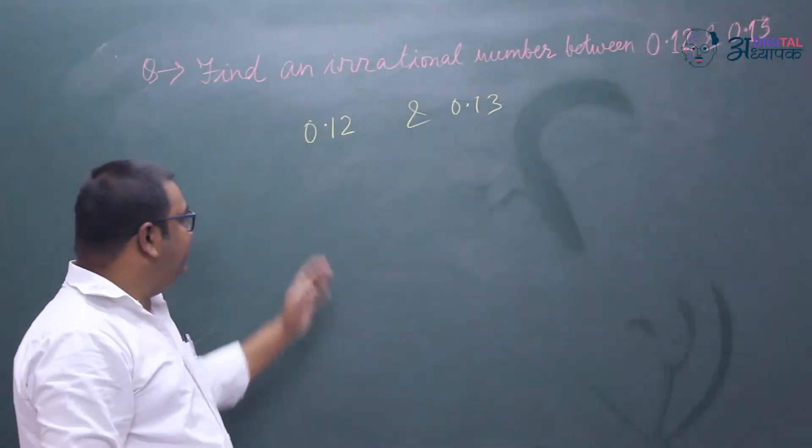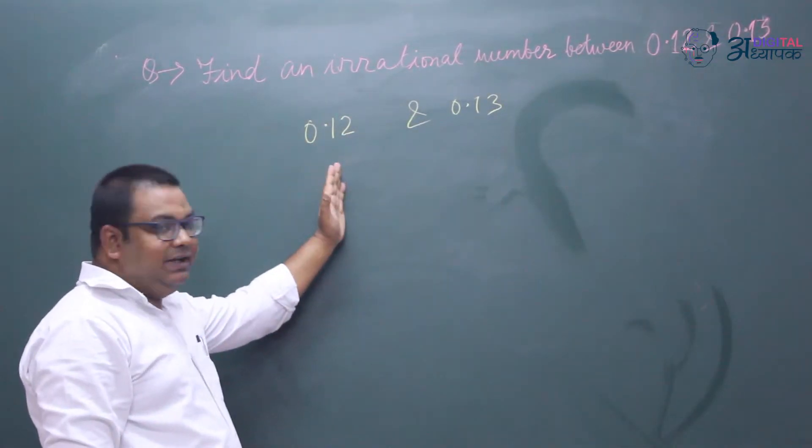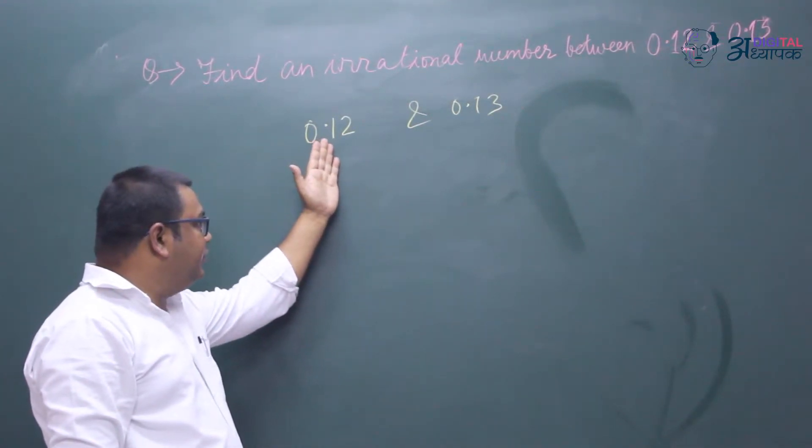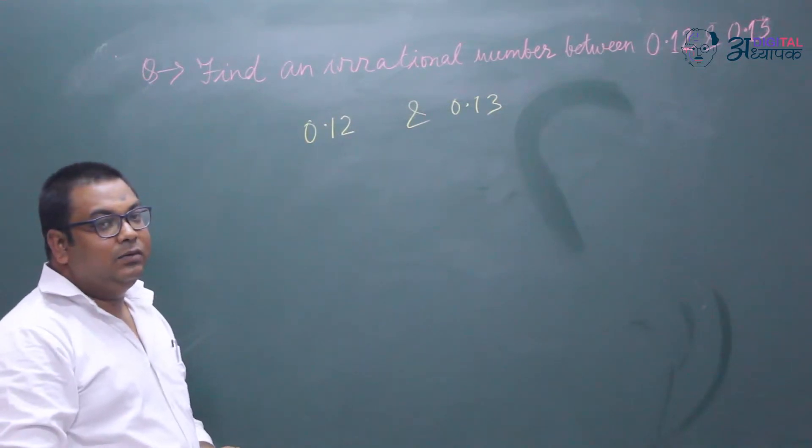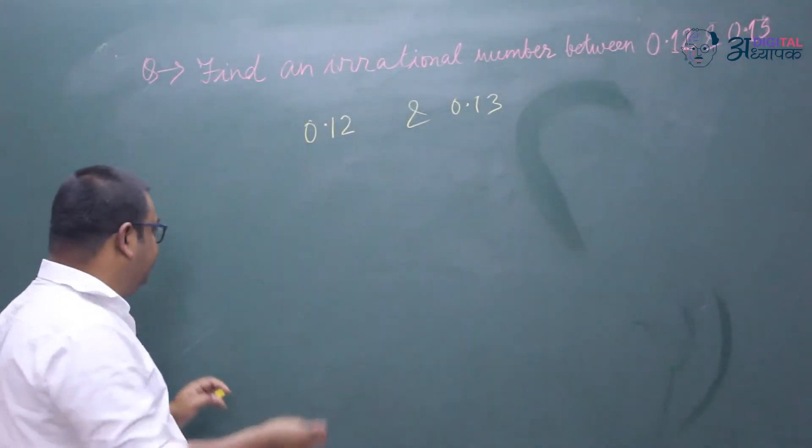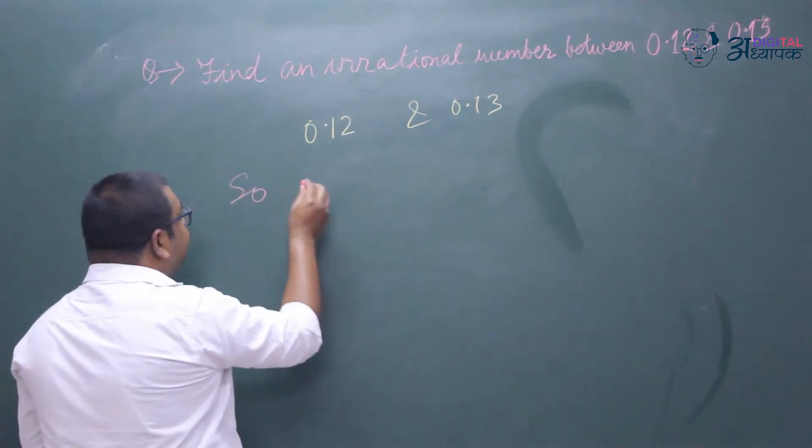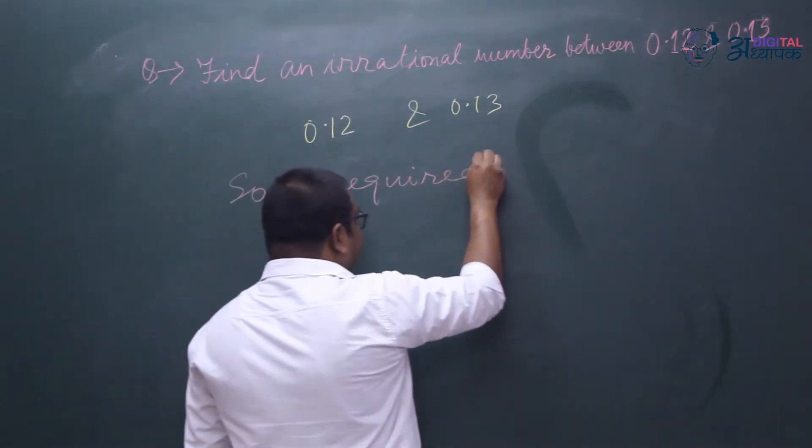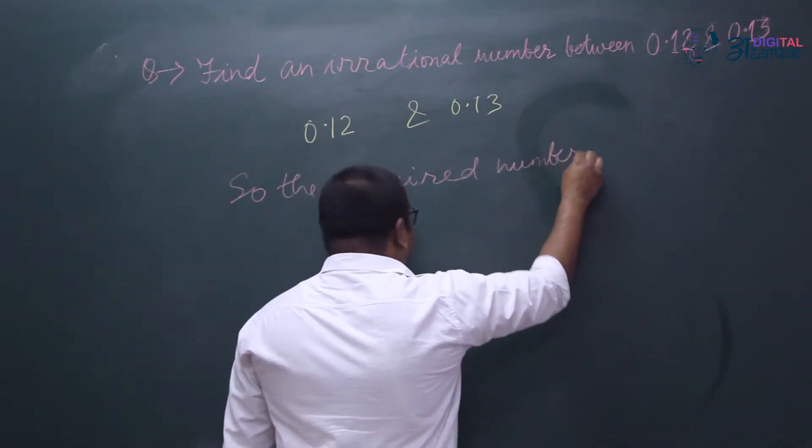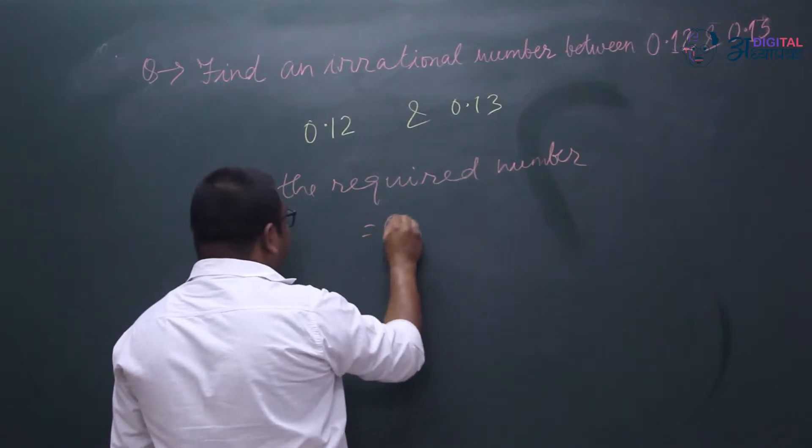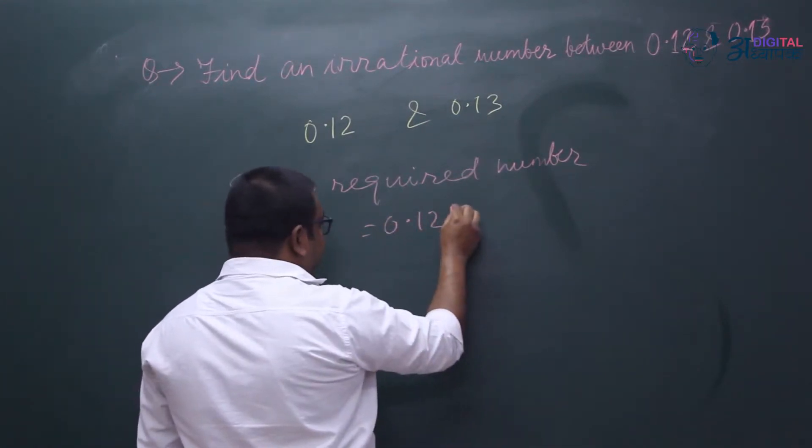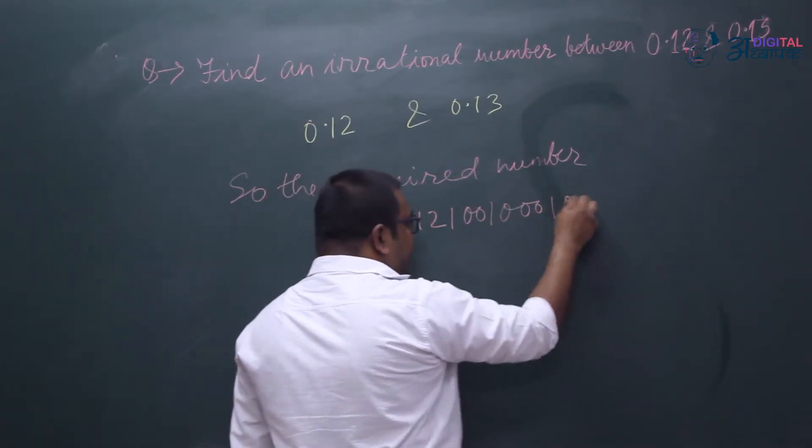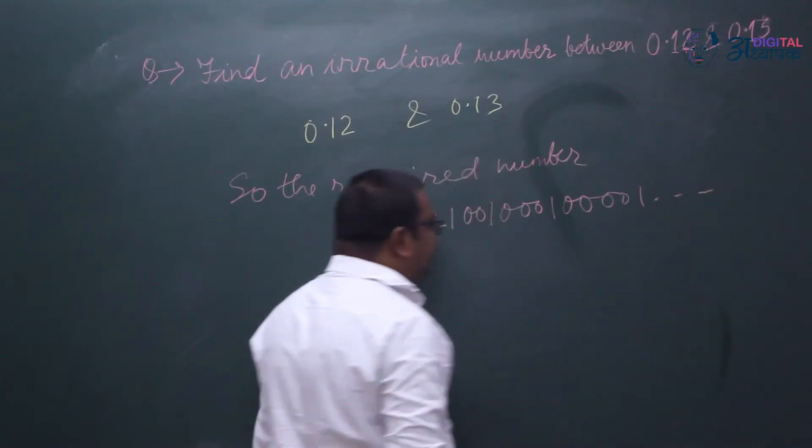So basically what we have to do is add certain irrational numbers which are after 0.12 and in the form of non-terminating, non-repeating decimal. So the required number can be equal to 0.121001001001... and so on, continuing indefinitely.